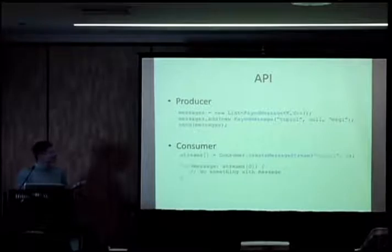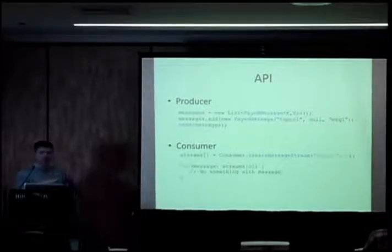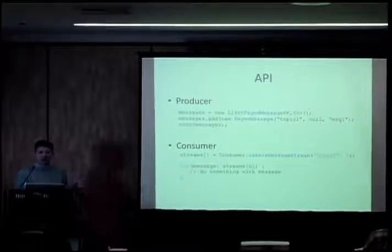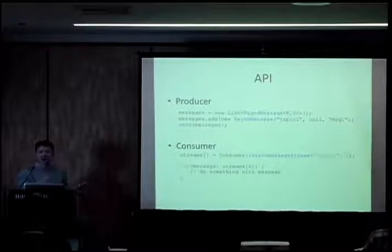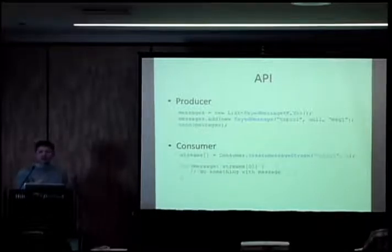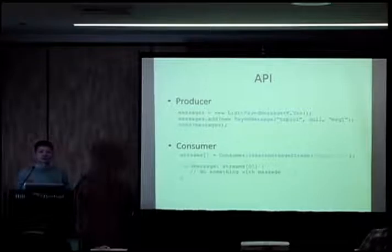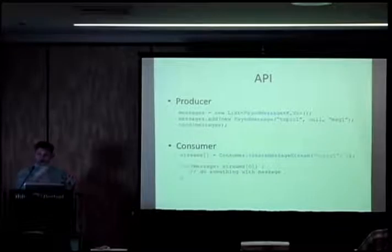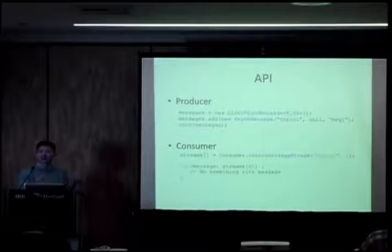For the consumer, the API is also simple. You create a message stream on a particular topic — you can give a set of topics or a regex pattern matching one or more topics, and pick up topics dynamically. You can also specify how many substreams you want. Once you have the stream, it supports an iterator API — you call iterator, and as you iterate, you get each message back and can process it.